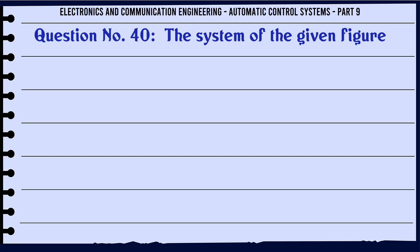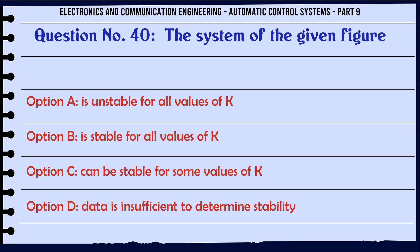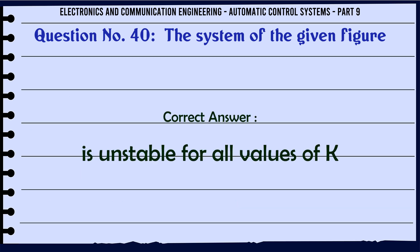For the system in the given figure: A. Is unstable for all values of K, B. Is stable for all values of K, C. Can be stable for some values of K, D. Data is insufficient to determine stability. The correct answer is: Is unstable for all values of K.